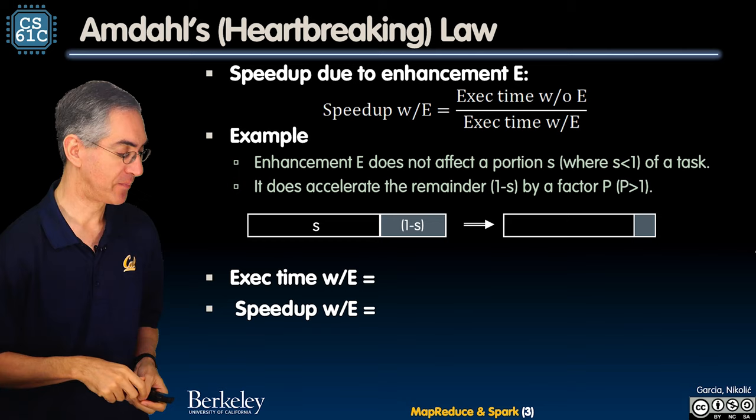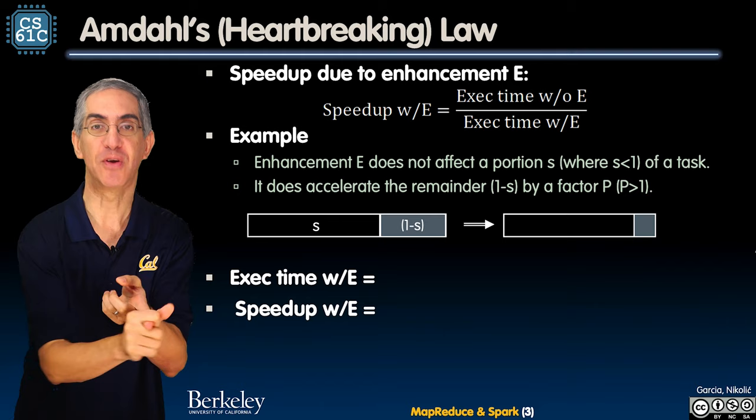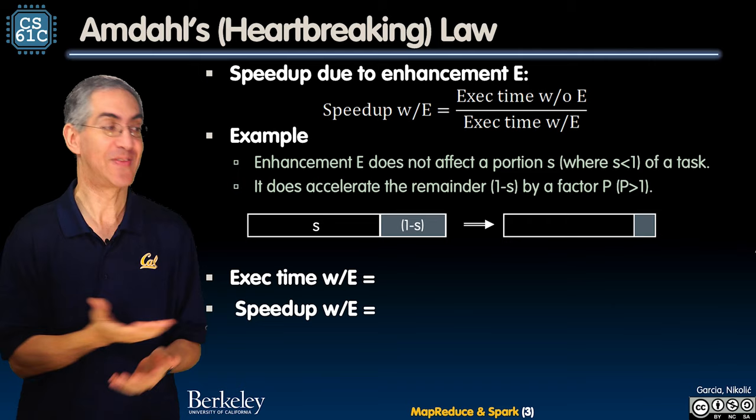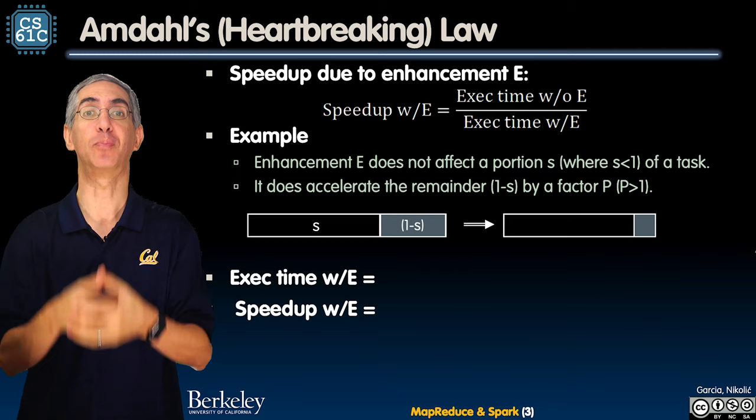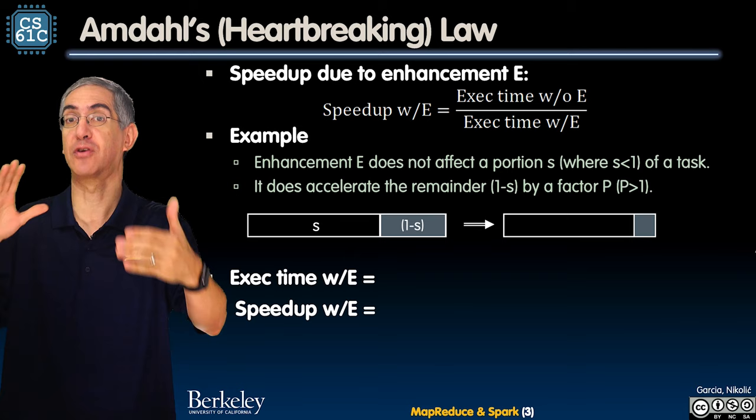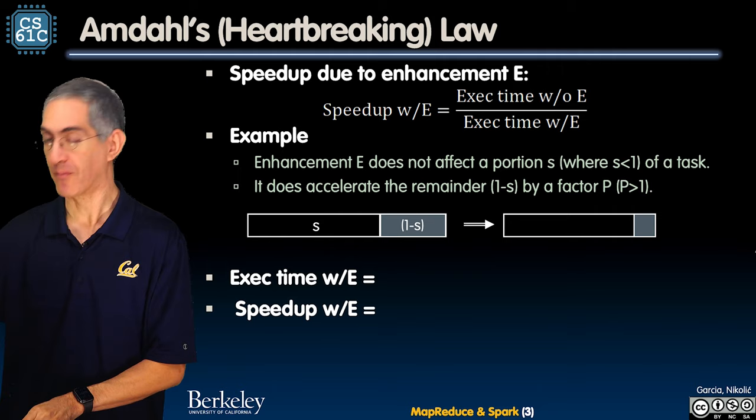So the model is the following. You have some enhancement — you want to upgrade your GPU, upgrade your memory, upgrade some part of your computer or some system. This law applies to anything; it doesn't even limit to computers. You have some enhancement, let's call it E, and you want to measure how much your speedup is — is it two times faster, three, five, ten, a hundred times faster based on this enhancement?